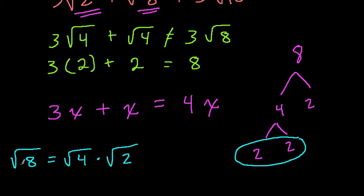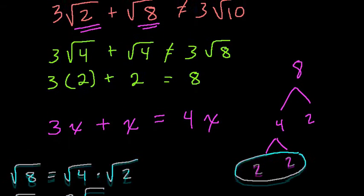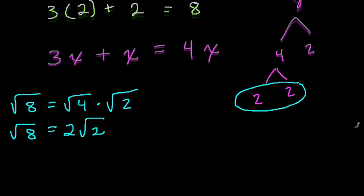The square root of a number is equal to the square root of the product of its factors, which is what I'm showing you right here. So the square root of 4 is 2, and radical 2 can't be broken down any further, but this is equal to the square root of 8. And this is nice because now what we have, go back to our original problem, 3 radical 2.